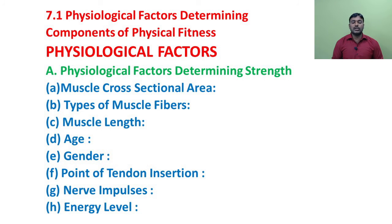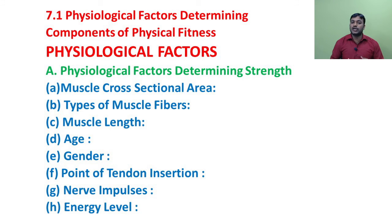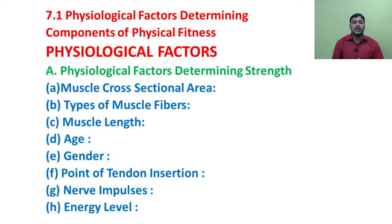Second factor: types of muscle fibers. The strength largely depends on the types of muscle fibers. Human muscles have two basic types: slow-twitch muscle fibers and fast-twitch muscle fibers.